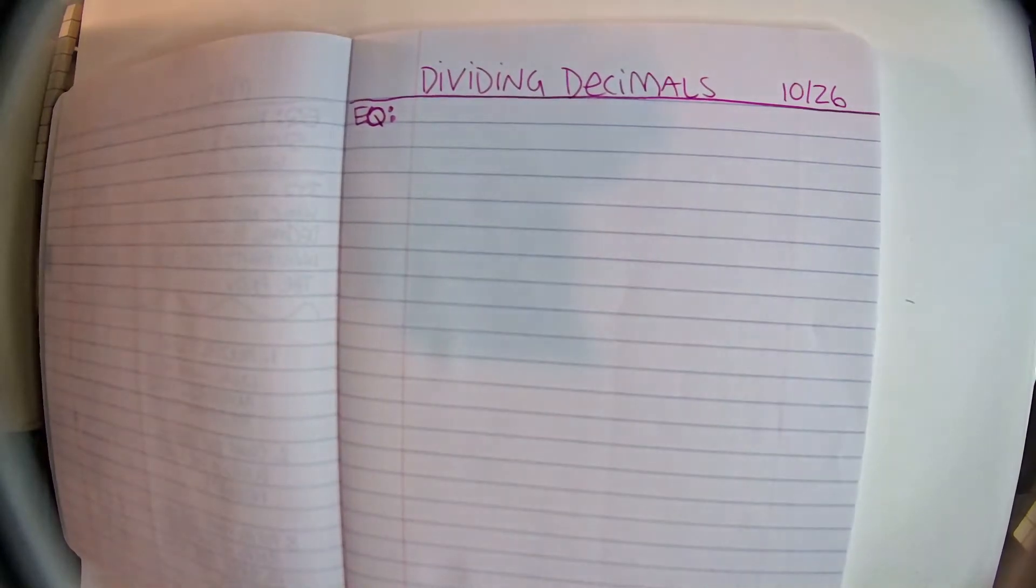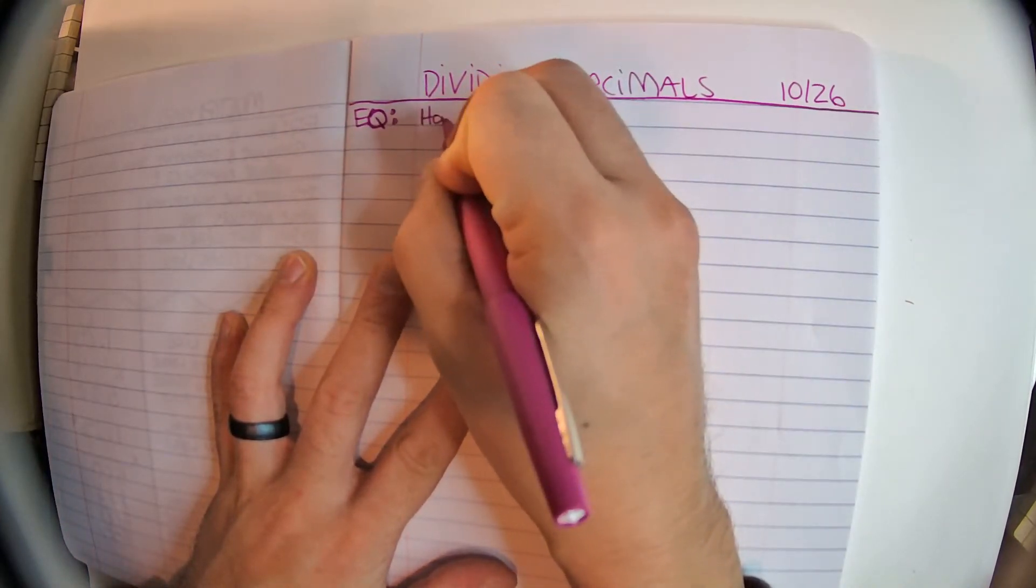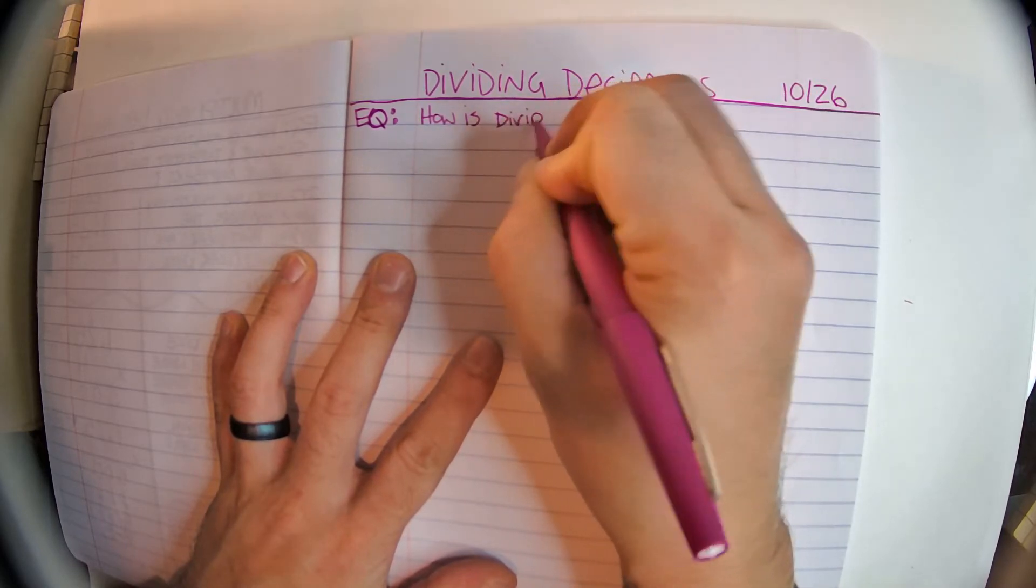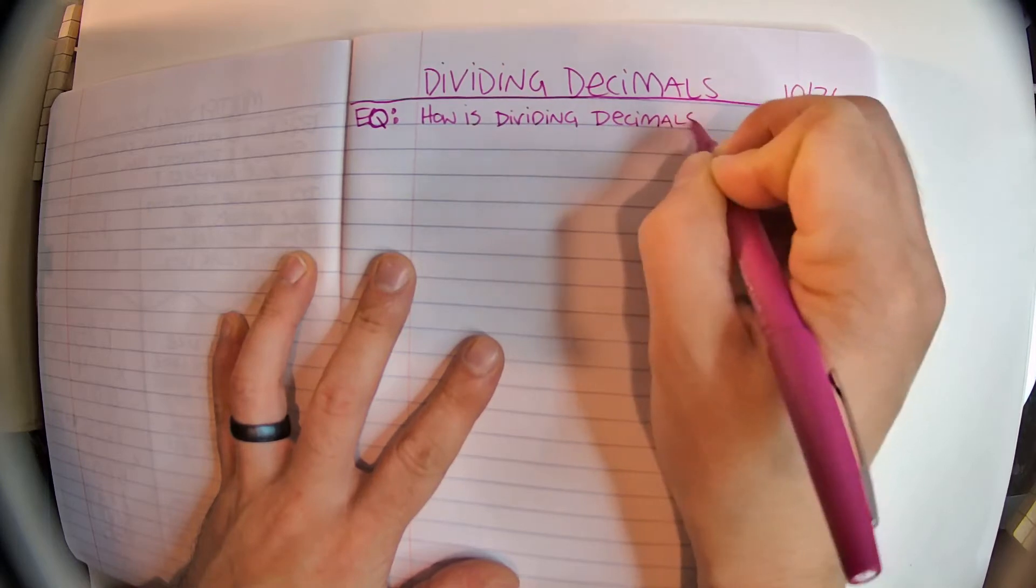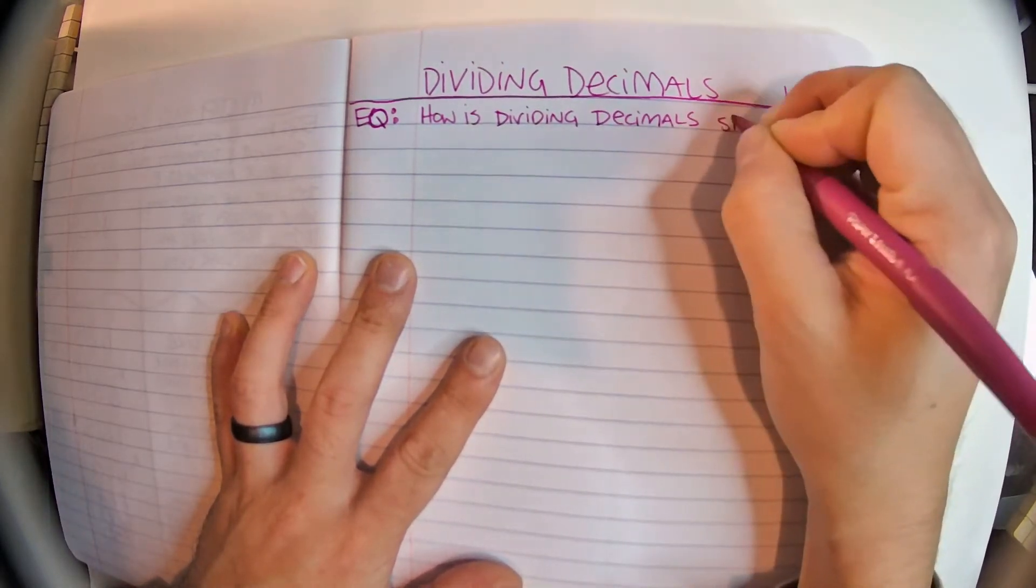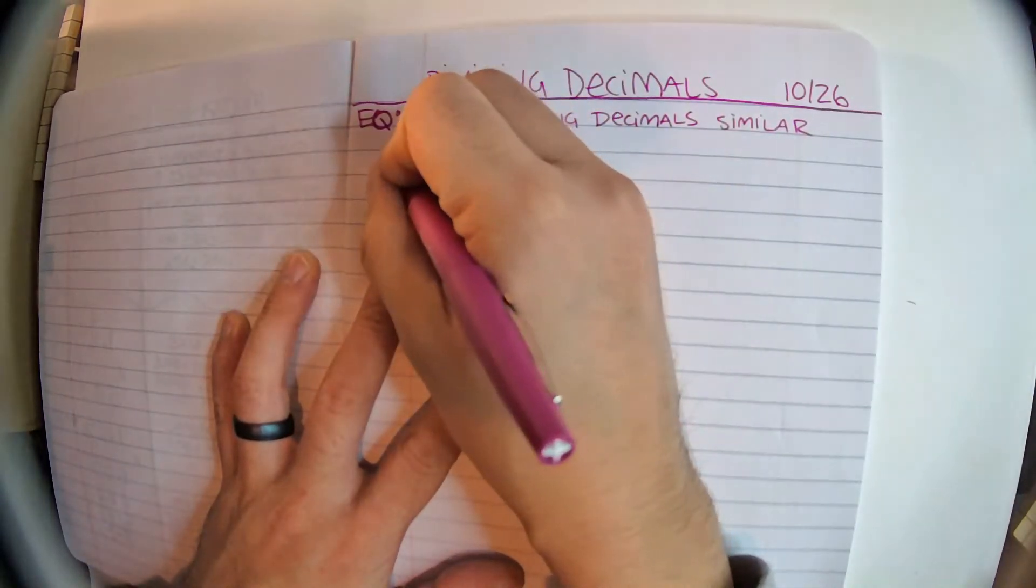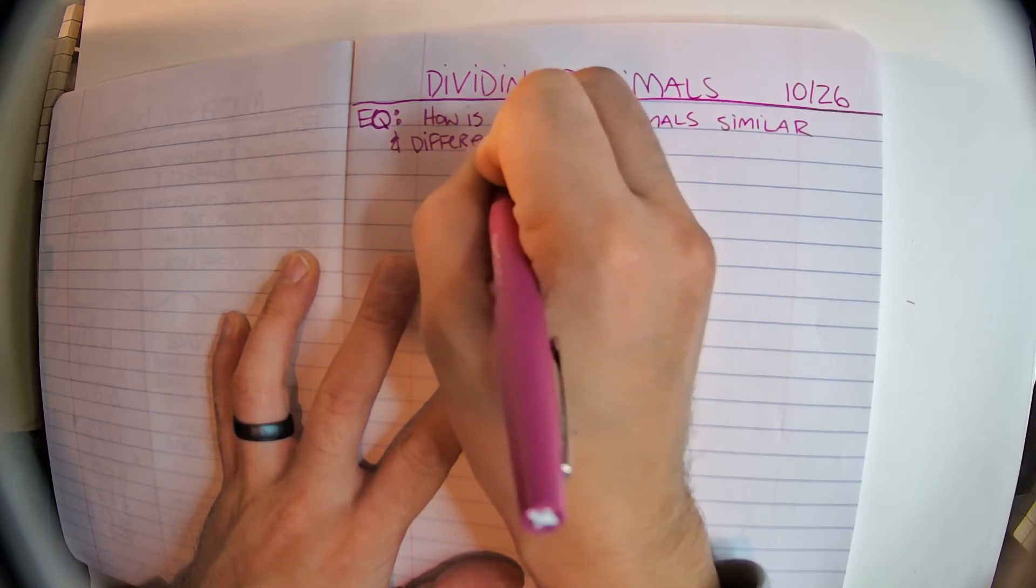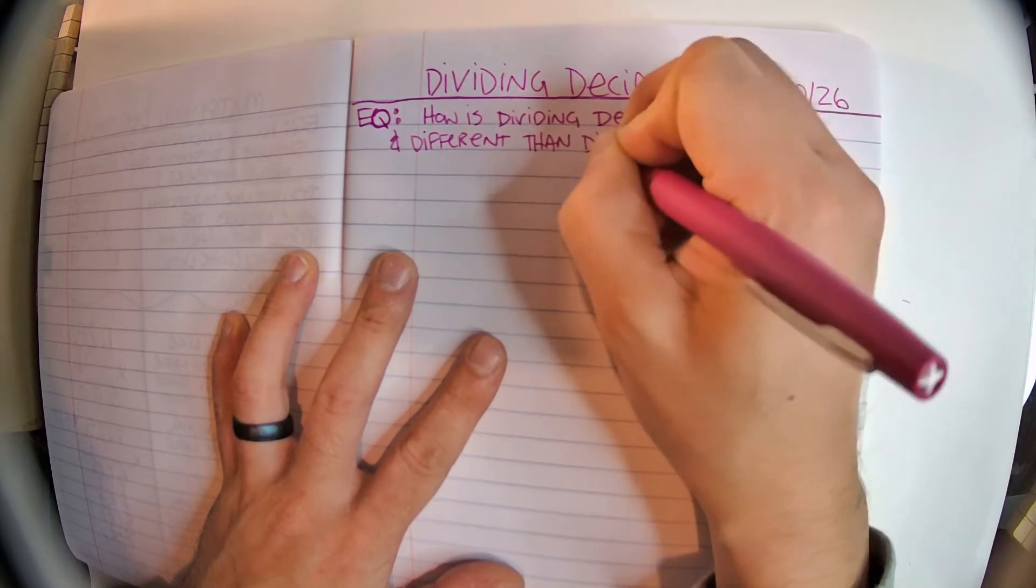So, there's our question. We're going to ask ourselves, how is dividing decimals similar and different than dividing whole numbers?